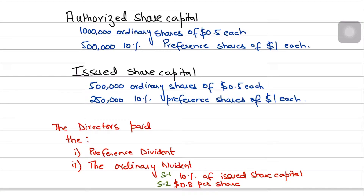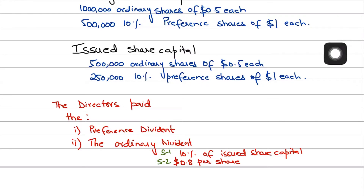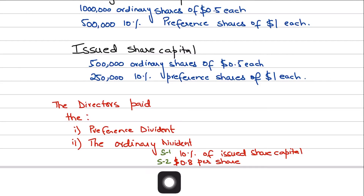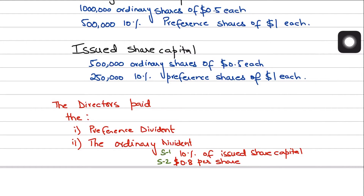The directors have paid both the preference dividend and the ordinary dividend. There are two scenarios in this question. In scenario 1, the directors paid the dividend as 10% of the issued share capital. In scenario 2, the directors paid a dividend of $0.08 per share.